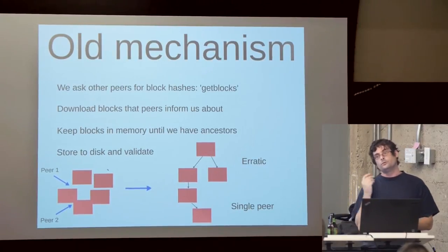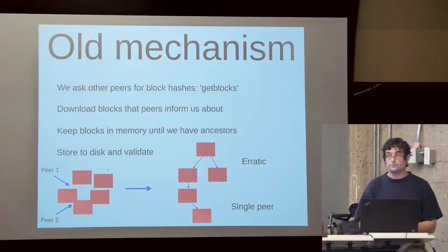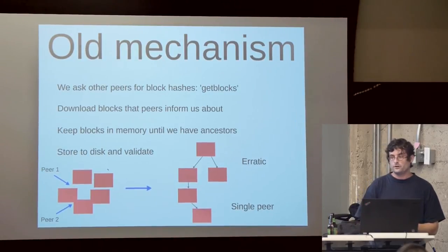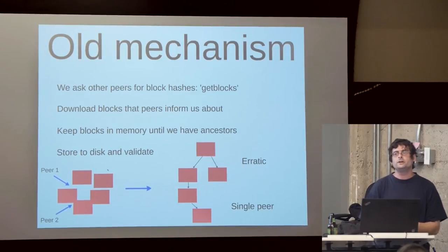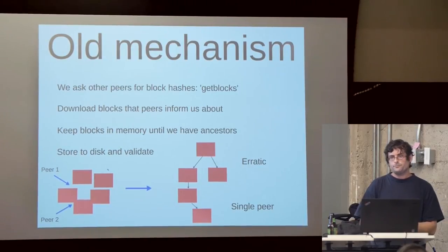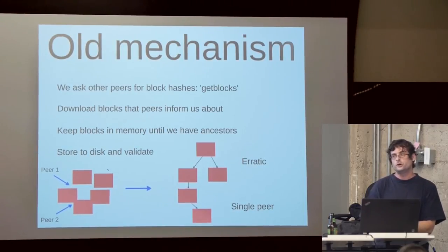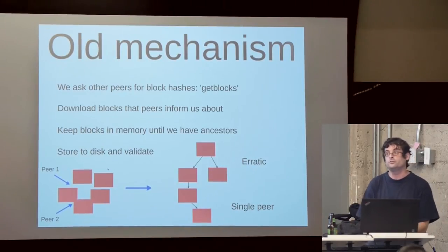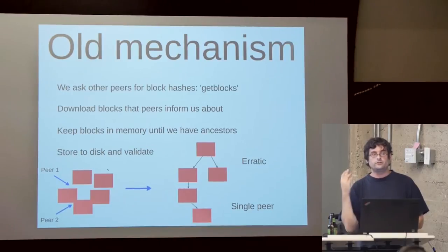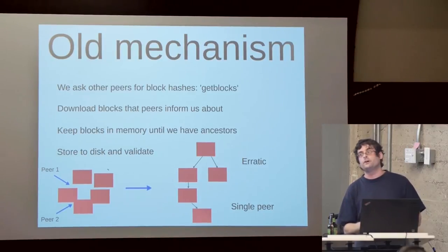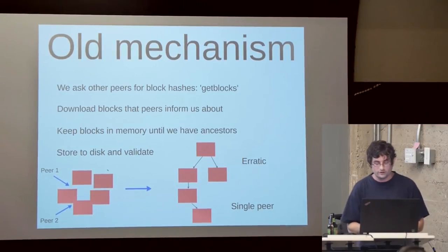In addition, we also have deterministic signing following a standard called RFC 6979. This means you don't need randomness when creating a transaction signature, and if you sign the same transaction twice, you get the same signature. This simplifies testing to a large extent as well.